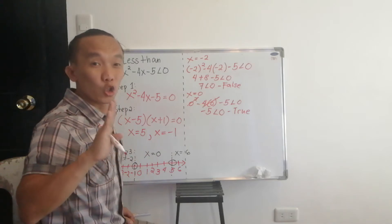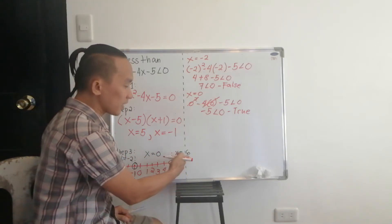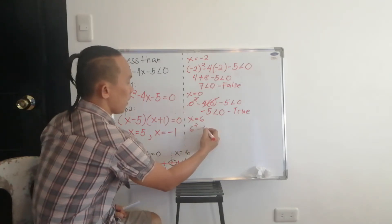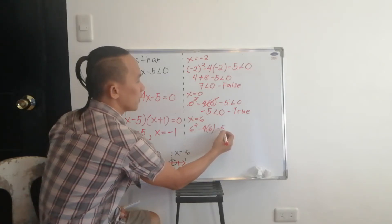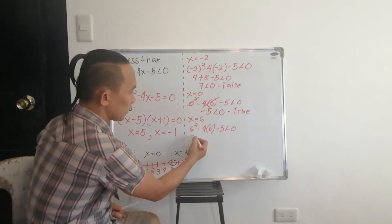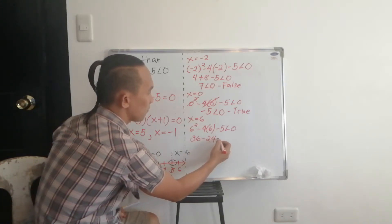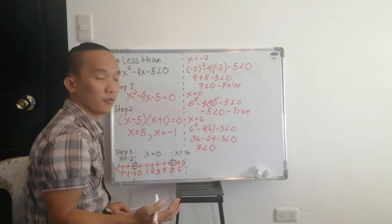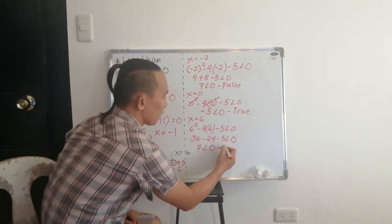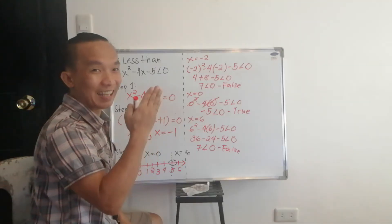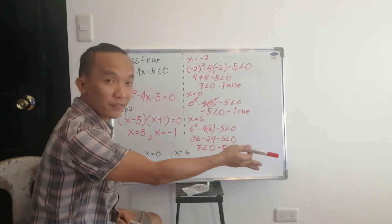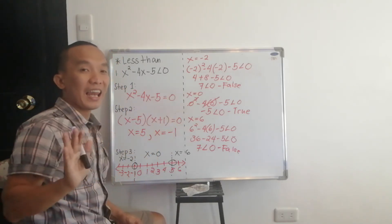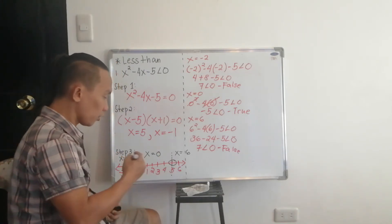Let us check x equal to six: six squared minus four times six minus five less than zero gives 36 minus 24 minus five, which equals seven. Is seven less than zero? No. Therefore this is a false statement, meaning values greater than five are not part of the solution. So the only solution to x squared minus four x minus five less than zero lies between negative one and positive five.